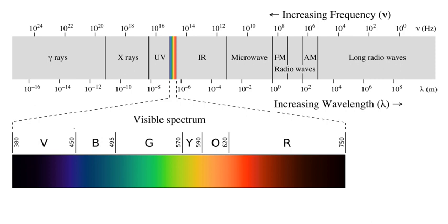Interference is the superposition of two or more waves resulting in a new wave pattern. If the fields have components in the same direction, they constructively interfere, while opposite directions cause destructive interference. An example of interference caused by EMR is electromagnetic interference, or as it is more commonly known, radio frequency interference. Additionally, multiple polarization signals can be combined — interfered — to form new states of polarization, which is known as parallel polarization state generation. The energy in electromagnetic waves is sometimes called radiant energy.